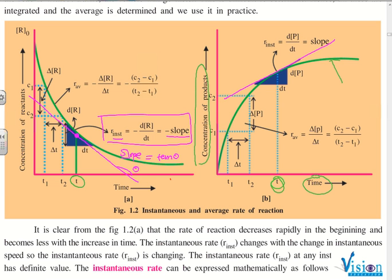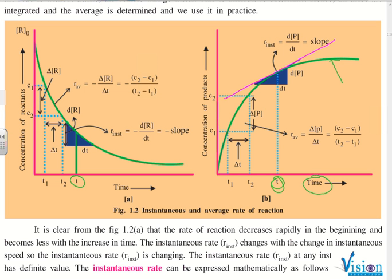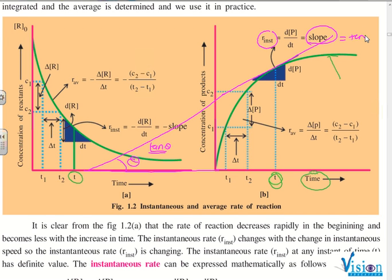For this tangent, if I have to extend that tangent over here, the angle theta is less than 90, that means it is in first quadrant. So this slope will be tan theta, it will be positive. That is why, for product, instantaneous rate is positive slope, which is equal to tan theta, equal to d[P] by dt.